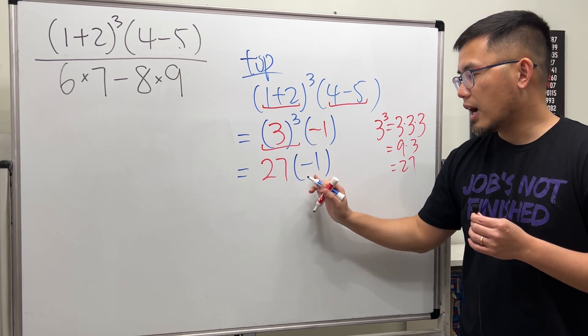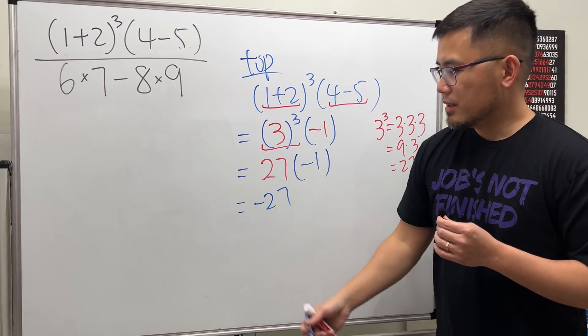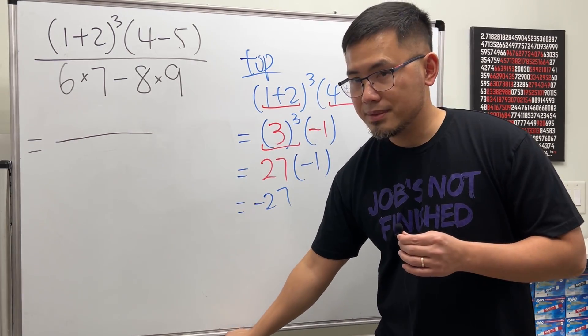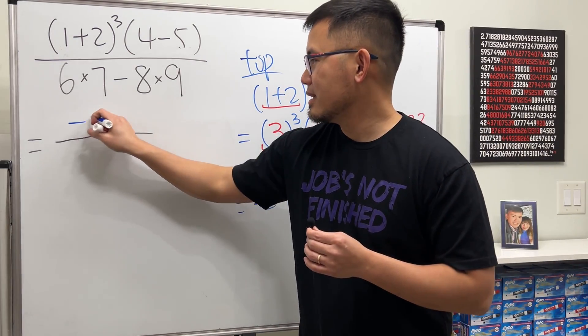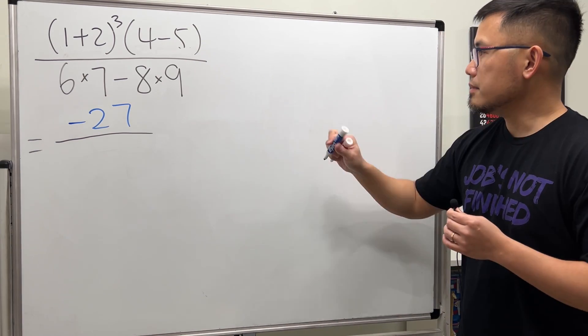And then we are going to still put down the parentheses and then the negative 1. This is 27×(-1), so we have -27. So we can come back here and say we have this right here. The top is -27.